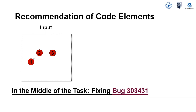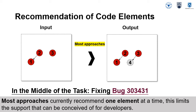Let me take the bug fixing task as an example. In the middle of the task, the developer has already accessed three nodes, say node 1, 2, and 3. Most approaches currently recommend one element at a time. As for the running example, those approaches recommend node 4. However, this limits the support that can be provided for developers.